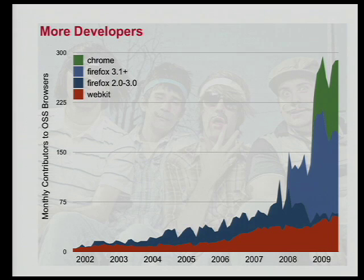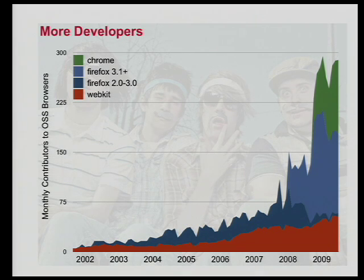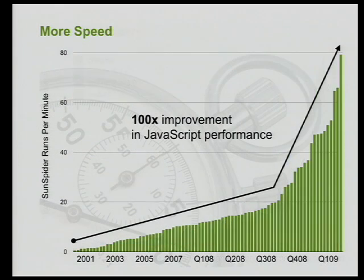Of course, it's not just about the technology. It's about people — the people in this room, those who've contributed to this amazing acceleration of innovation that we've seen. This chart shows the unique monthly contributors to open source projects. Just look at the growth of our community of developers contributing to make the web better. As our community grows, we see more innovation.